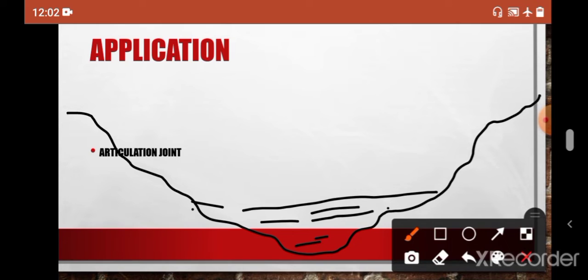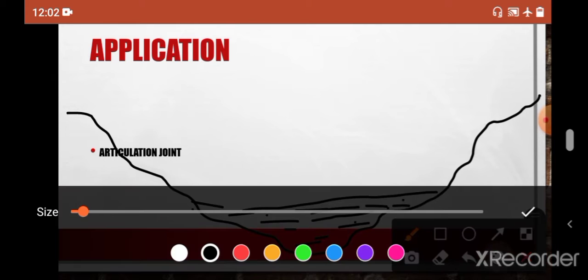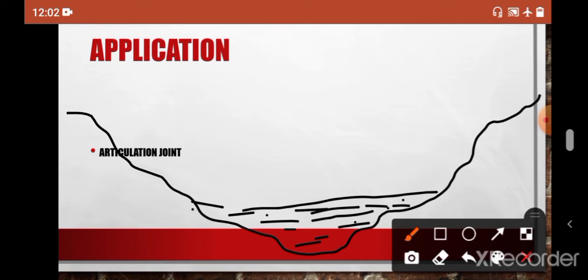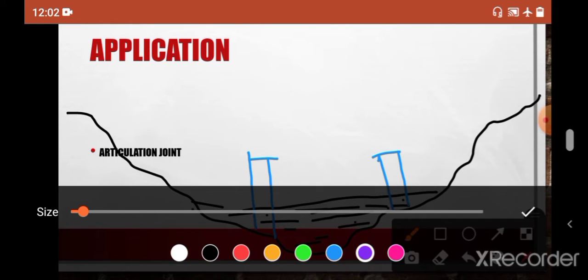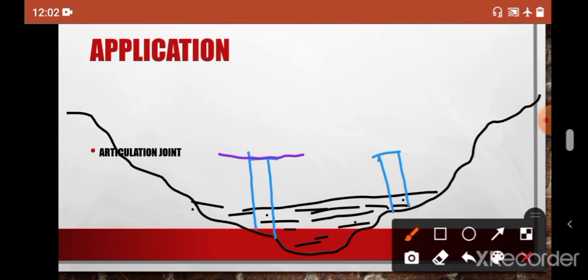Now here you have to build a bridge. So first what you have to do: first part is we are erecting two piers in the river bed itself. Then we are applying our deck over it.